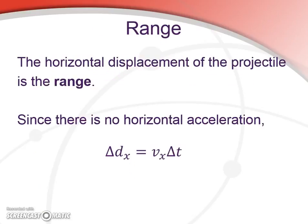Now, another important parameter of a parabola's or a projectile's path is the range. And the range is defined as the horizontal displacement of the projectile, and it's given by a very simple equation that we've seen many times before. Since there's no acceleration in the horizontal direction, the range is just the velocity in the x direction times the duration of the experiment.